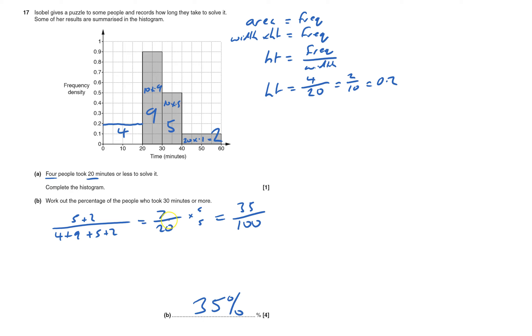There's other ways you could have done it. You could have said 7 over 20 is the same as 3.5 over 10, and then times top and bottom by 10 to get 35 over 100. It doesn't really matter.